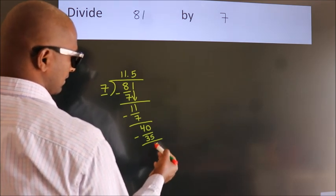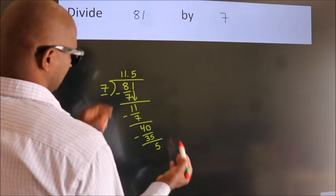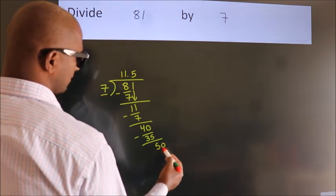After this, we already have the decimal. So, directly take 0. So, 50.